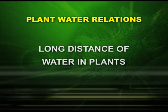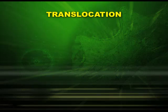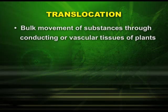Till now, you have studied about the transport of water in short distances. Now, let us study the long distance transport of water in plants. Have you ever placed a twig bearing white flowers in colored water? You observe the flower becomes colored. Today, we are going to find out the reason for that — it is due to the process of translocation. Translocation is the bulk movement of substances through vascular tissues in plants.